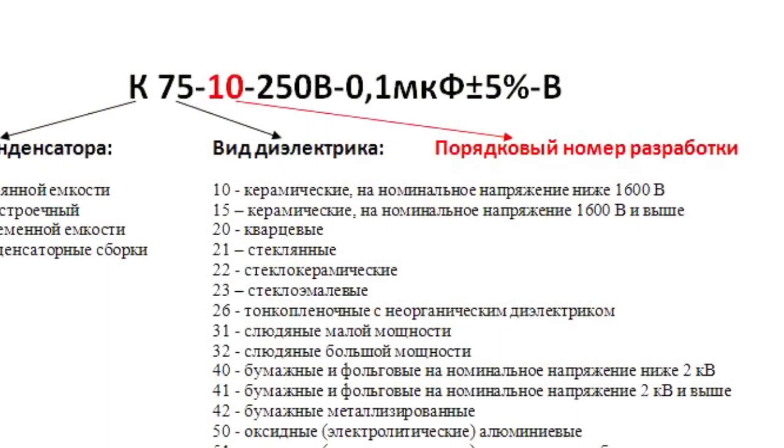The third element is the index number of the exact design type, and may include a letter designation. For example, P for operation in AC and DC circuits; Ch for operation in AC circuit; U for operation in DC circuits and pulse modes; and E for operation in pulse modes.